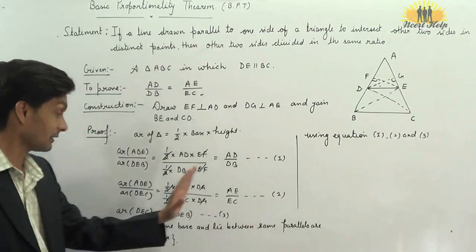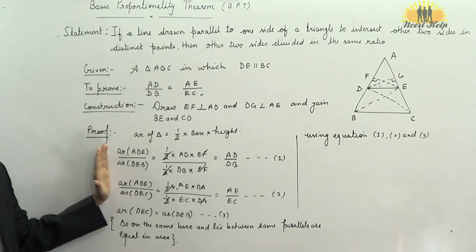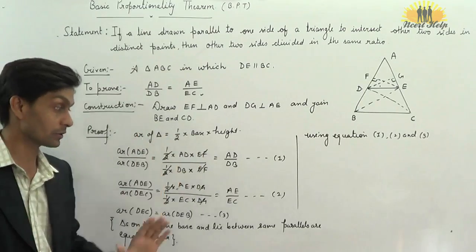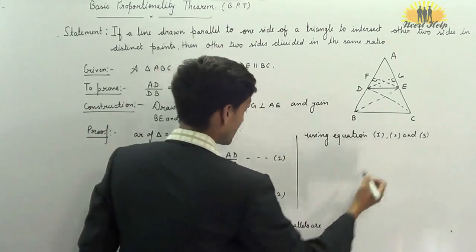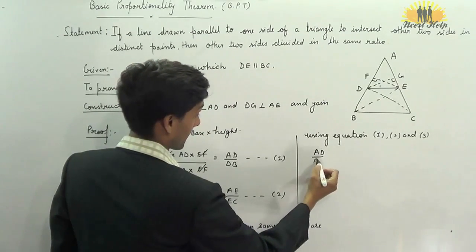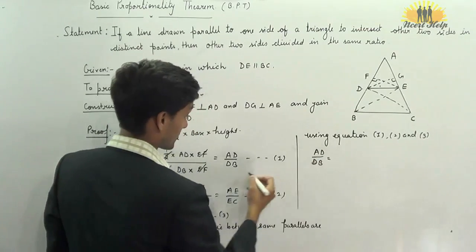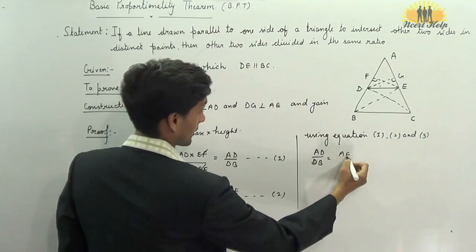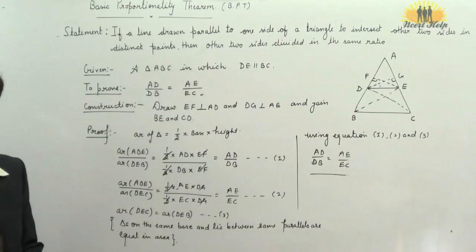So, from equations 1, 2, and 3, we get AD by DB is equal to AE by EC. This is basic proportionality theorem.